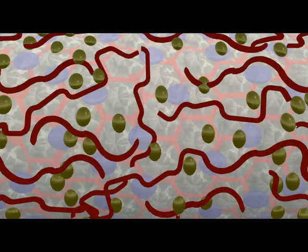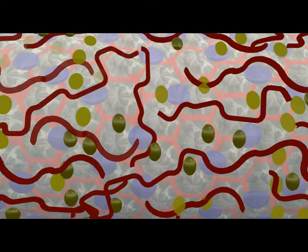Can you see the red tight junction connections between adjacent Sertoli cells? I will make the tubule transparent so you can see them better.